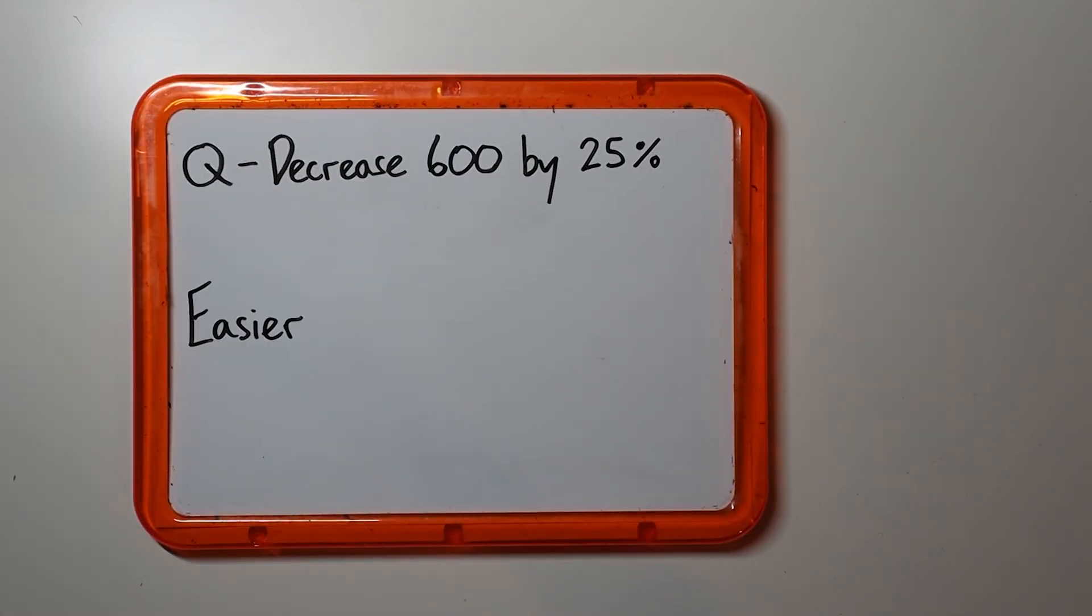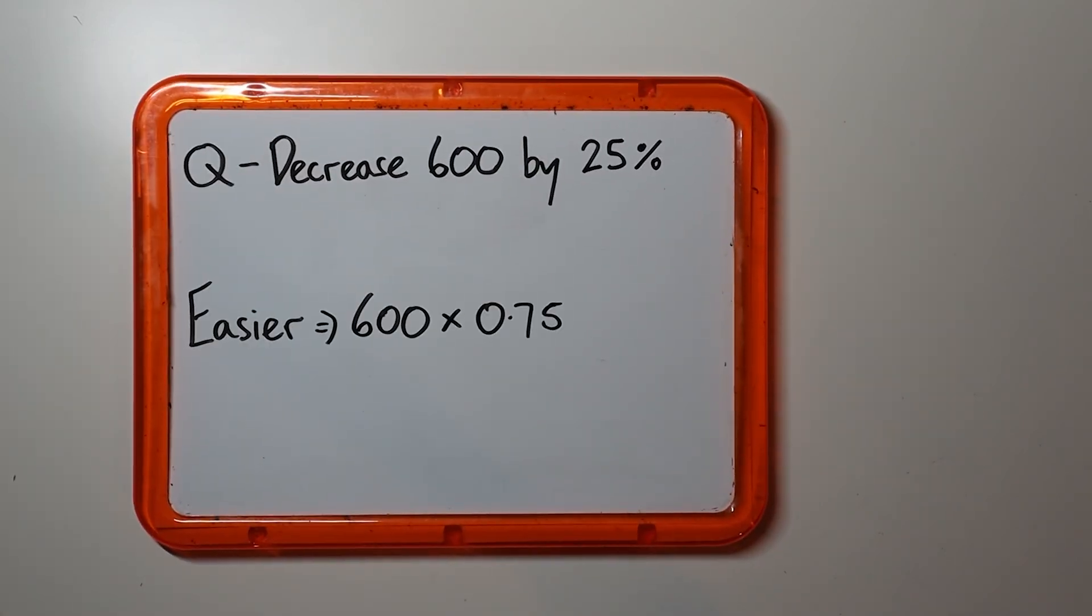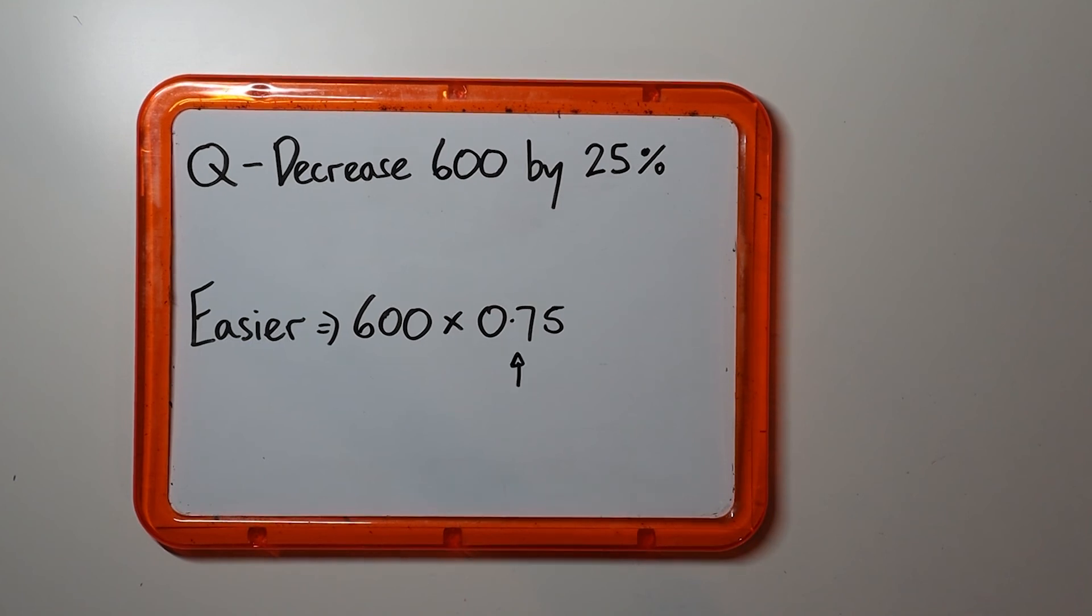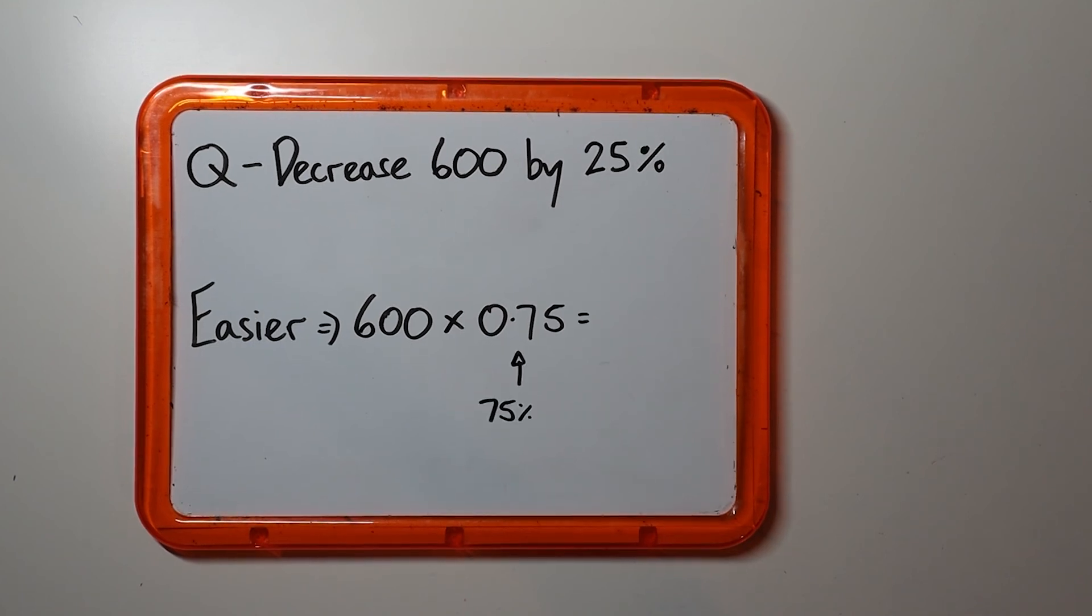Now, this can all be made even easier by just multiplying by 0.75, as 0.75 of a number is the same thing as 75% of a number.